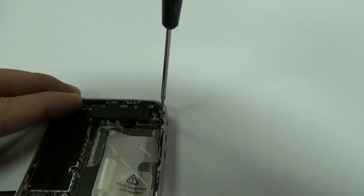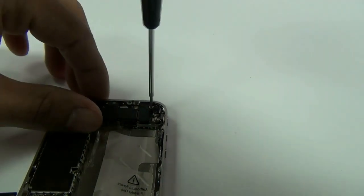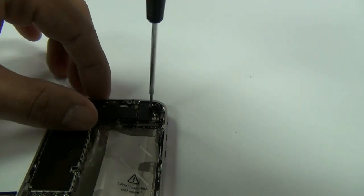Once that is removed, you can remove two screws holding your vibrator module in place. Please remember these screws are different sizes, so you will want to keep them in the same order that you took them out.